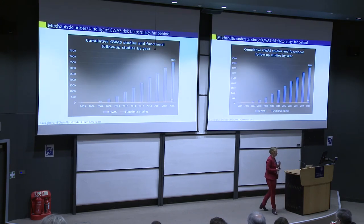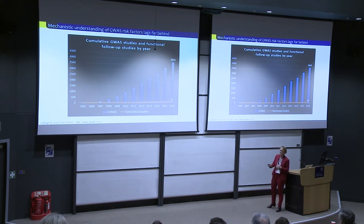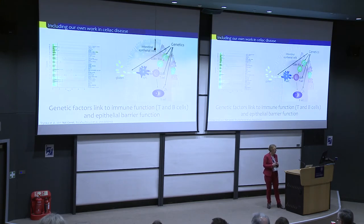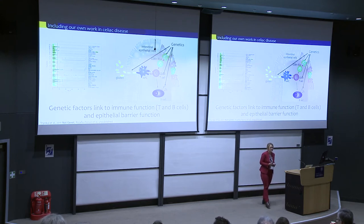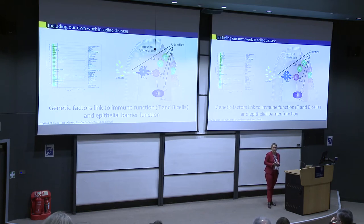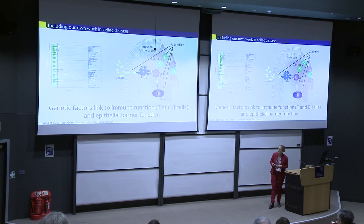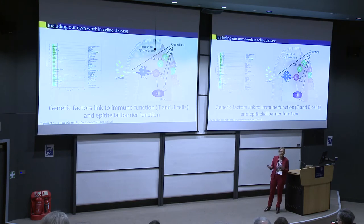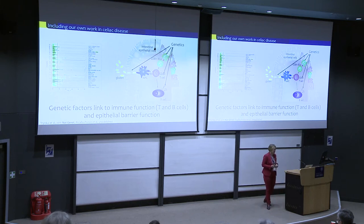We all know this figure — we have done great work in GWAS discoveries, but if you look at the red line, which represents functional studies, we lag very much behind. That's also true for the work I've been doing myself over the past 20 years, trying to elucidate the genetics of celiac disease, which is an intestinal inflammatory disease. Although we have discovered lots of GWAS findings and can link them to causal mechanisms like T-cell and B-cell biology and the role of the epithelial barrier — which is also the first line of defense where gluten passes through as the triggering factor — we really do not understand at all how those genetic risk factors impact that biology.